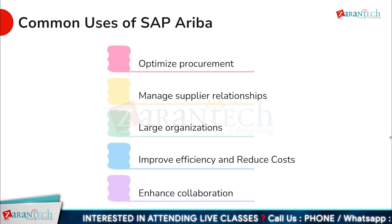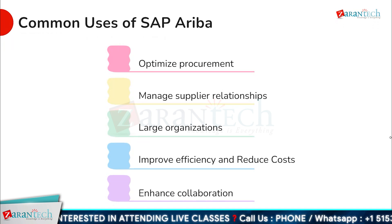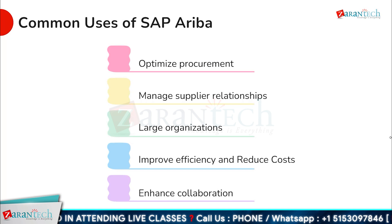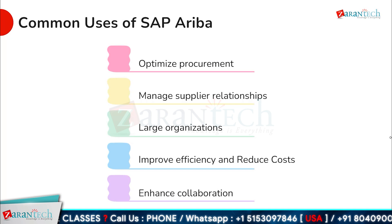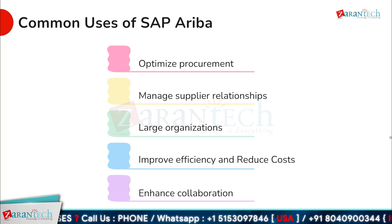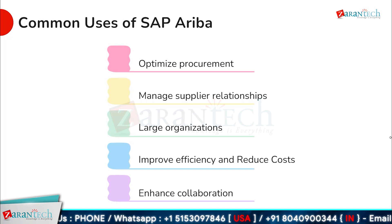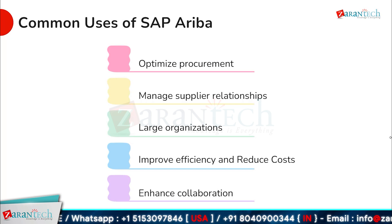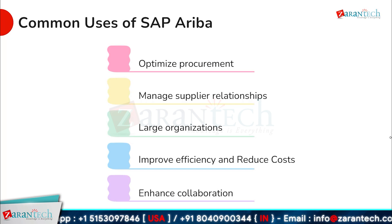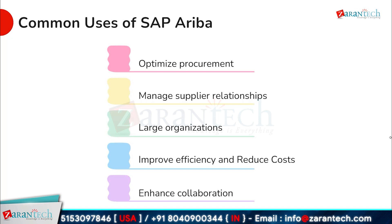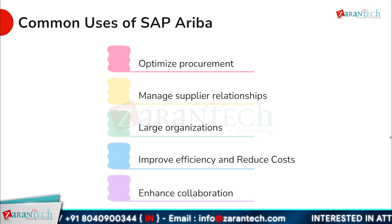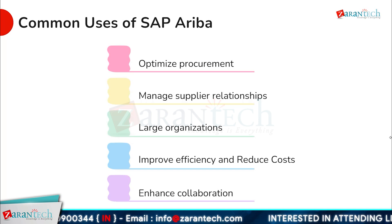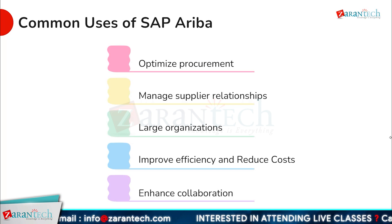SAP Ariba is commonly used by businesses to optimize their procurement processes. The platform helps manage supplier relationships, ensuring that businesses have access to the right partners and can collaborate effectively with them. SAP Ariba is particularly useful for large organizations which often have complex procurement needs. The platform helps these organizations improve efficiency and reduce costs by streamlining and automating procurement processes. SAP Ariba also enhances collaboration between buyers and suppliers, ensuring that everyone is working towards the same goals.